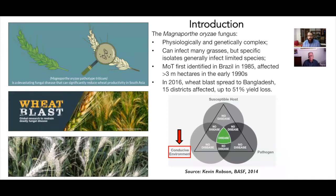We're talking about wheat blast disease, or Magnaporthe oryzae Pathotype Triticum — a physiologically and genetically complex disease that can infect many different kinds of grasses, with specific isolates tending to affect specific species. We are particularly interested in the wheat crop. MOT was first identified in Brazil in the mid-1980s, where it affected several million hectares over time, with variations in population and impact depending on the year.